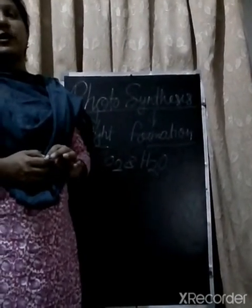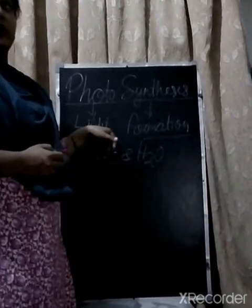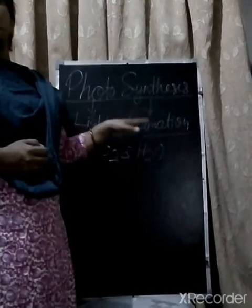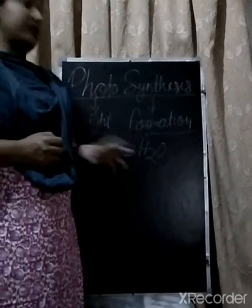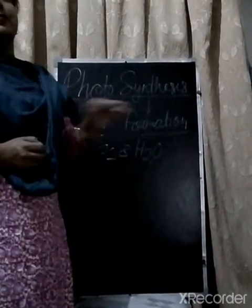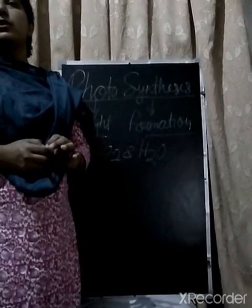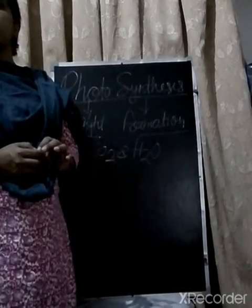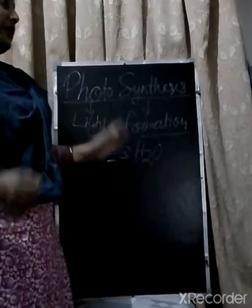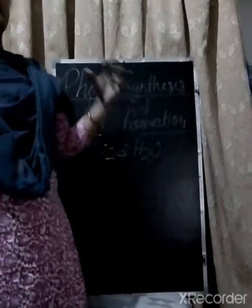So the definition is: the process that occurs only in green plants, through which they make their own food in the presence of sunlight, with the help of chlorophyll pigments, using inorganic substances like CO2 and H2O, to produce organic substances like glucose or carbohydrate. This is known as photosynthesis.